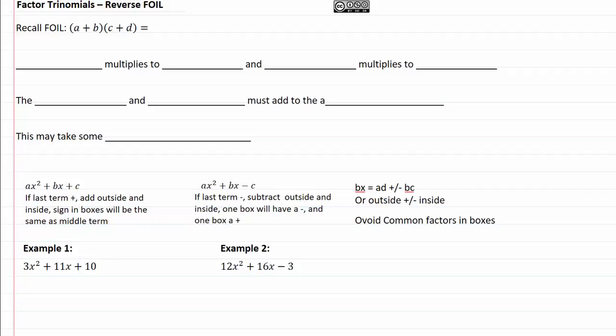Factor Trinomials, Reverse Foil. Recall that when we were foiling, we took the first terms, which would give us AC, then we took the outside terms, in this case which would give us AD, then the inside terms, and then finally we would do the last terms.